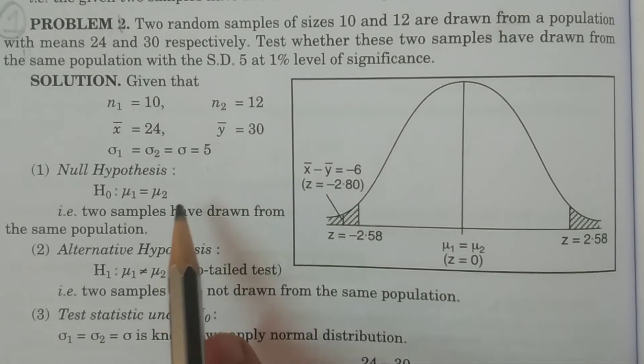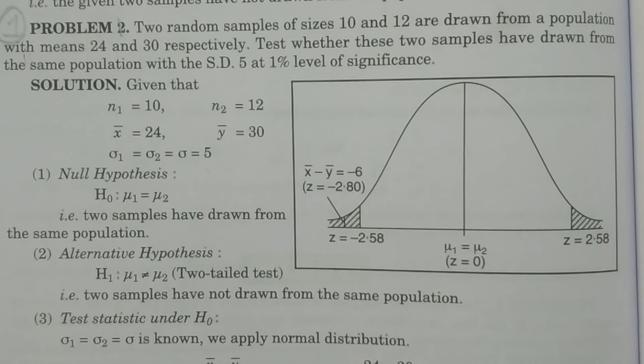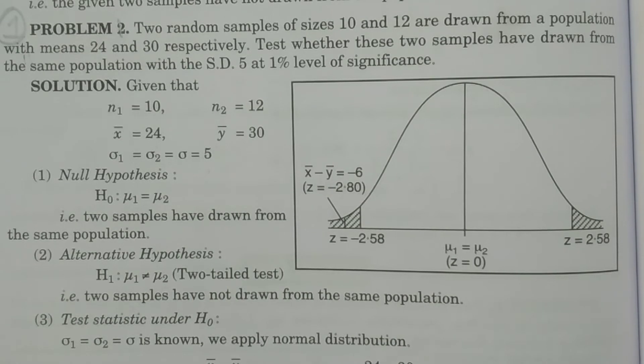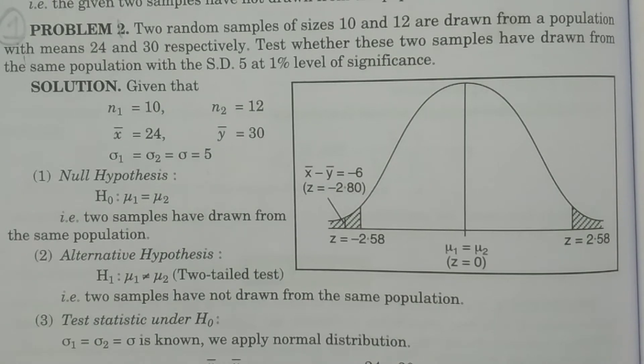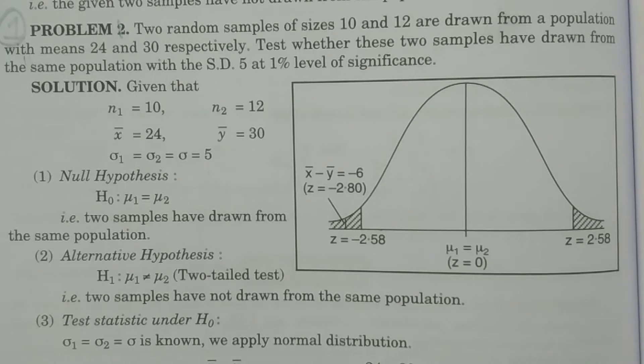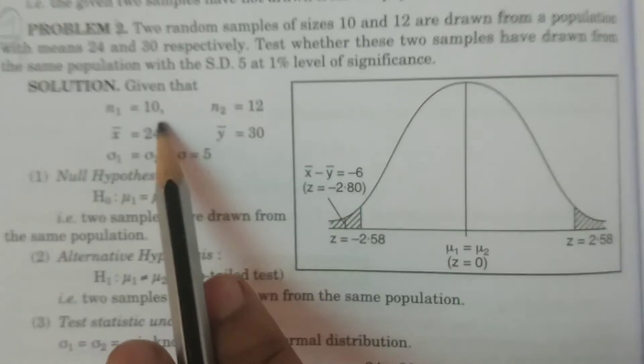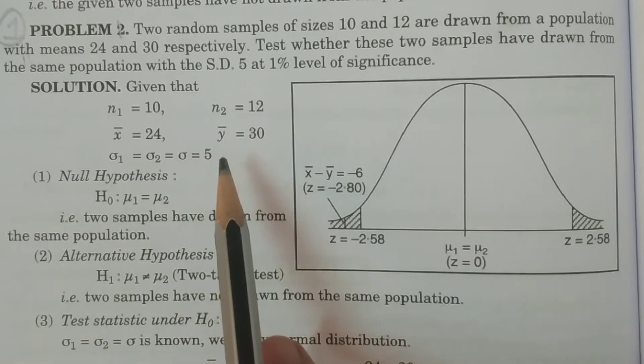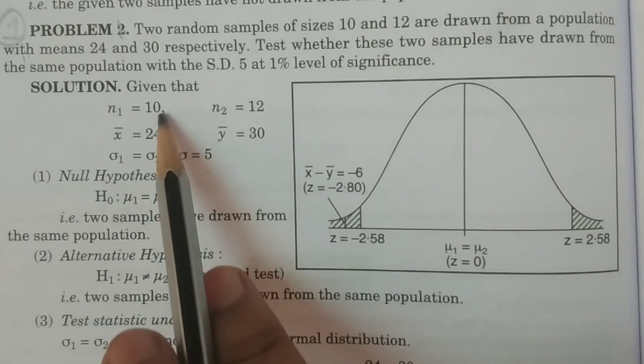So this is what we have to do the problem in this case. This is case one. There are two particular cases. In general, there are two particular cases: sigma is known and sigma is not known, in which you have to conduct this test procedure.